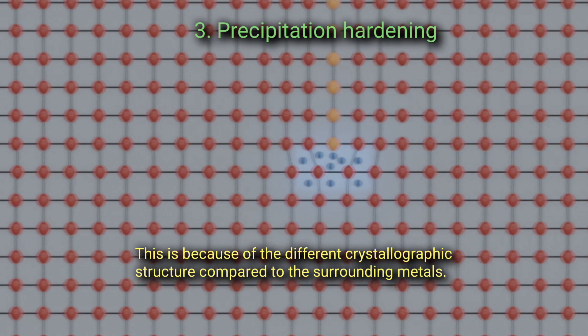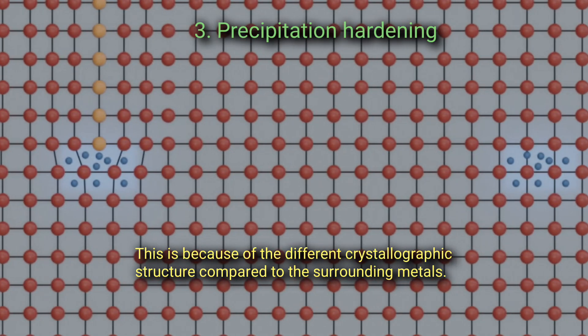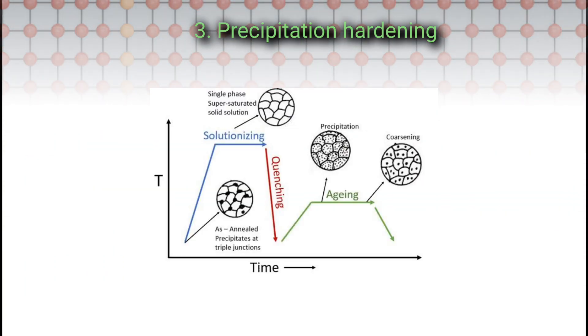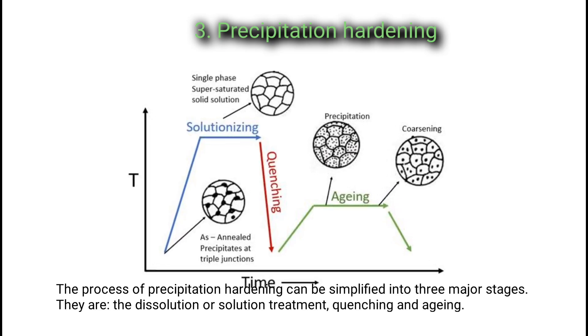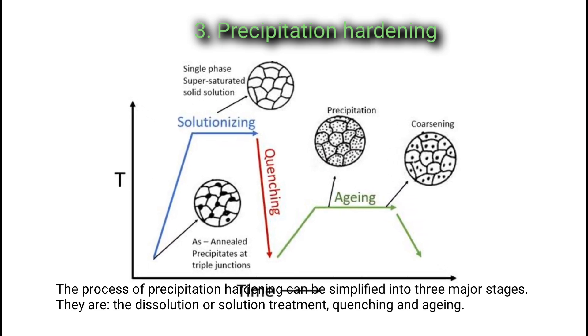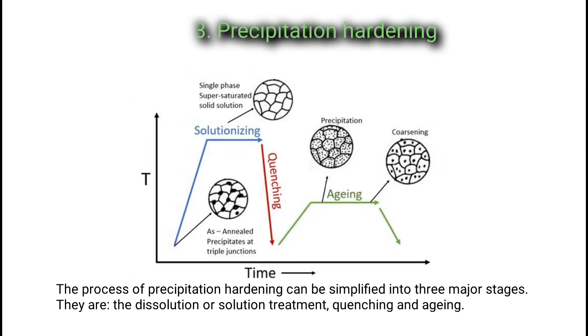These precipitate particles obstruct the propagation of the dislocation that causes deformation when stress is applied to alloy parts. This is because of the different crystallographic structure compared to the surrounding metals. The process of precipitation hardening can be simplified into three major stages: they are the dissolution or solution treatment, quenching, and aging.